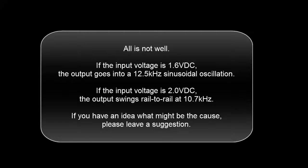All is not well. If the input voltage is 1.6 volts DC, the output goes into a 12.5 kilohertz sinusoidal oscillation. If the input voltage is 2 volts DC, the output swings rail to rail at 10.7 kilohertz. If you have an idea what might be the cause, please leave a suggestion.